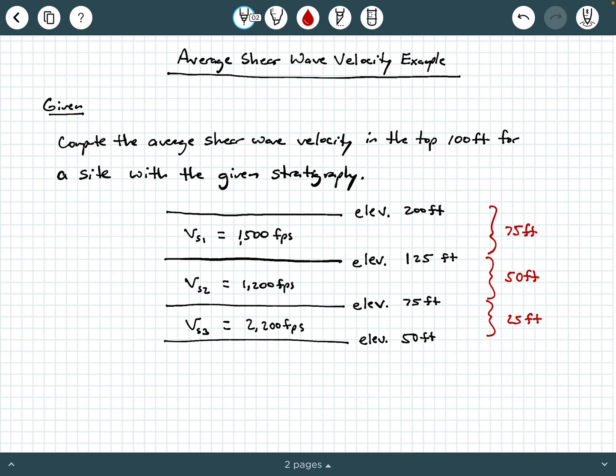Now here's where you got to be careful. In ASE 722, we're always interested in the shear wave velocity within the top 100 feet. So if you notice, these soil layers are not adding up to 100. In fact, if you say 75 plus 50 plus 25, this whole thing is 150 feet.